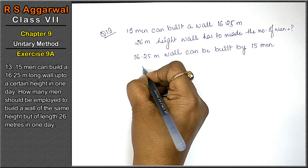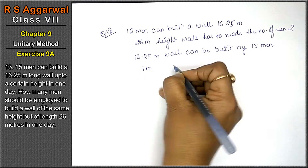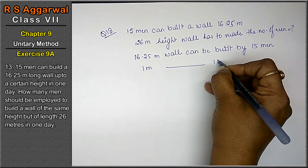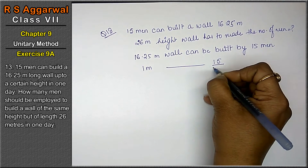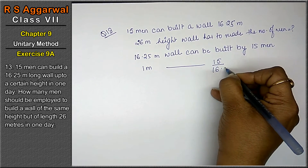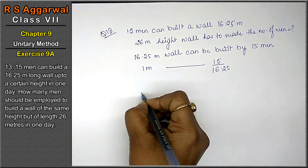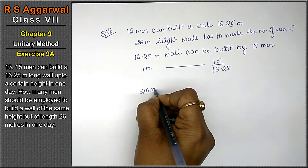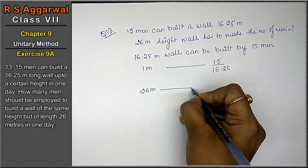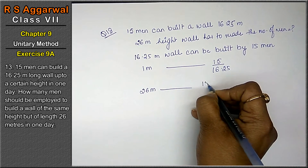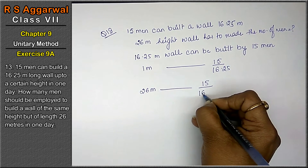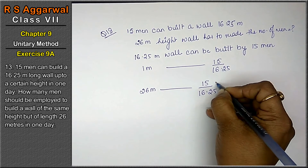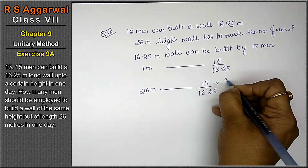So, 1-meter wall can be built by 15 upon 16.25 men. And a 26-meter wall can be built by 15 upon 16.25 into 26 men.